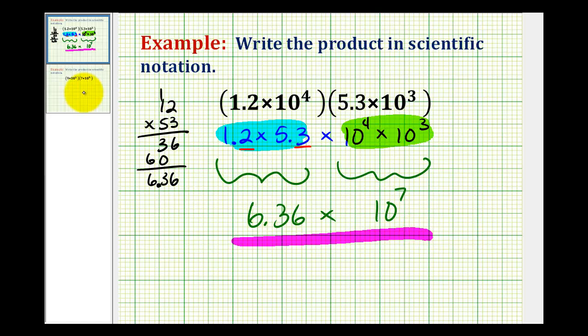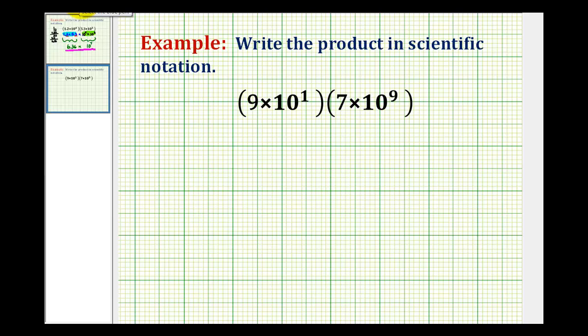Let's take a look at one more example. Again, our first step will be to reorder this multiplication. We're going to have 9 times 7 times 10 to the first times 10 to the ninth. Notice in this example, when we multiply the significands, we have 63. And then when we multiply 10 raised to our powers, we're going to have 10 to the tenth.